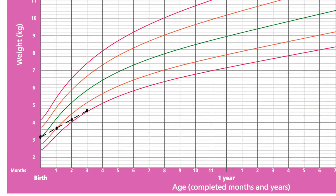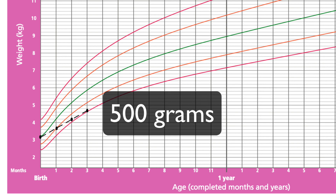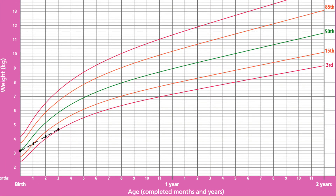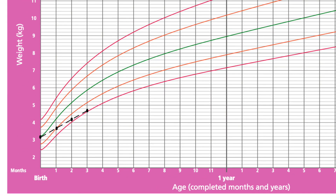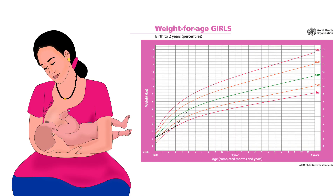Another problem is slow growth. Pooja's average weight gain is only 500 grams per month. Her birth weight was average at the 50th percentile line; however, she became undernourished in just 3 months. She needs effective breastfeeding to come back to the 50th percentile line.